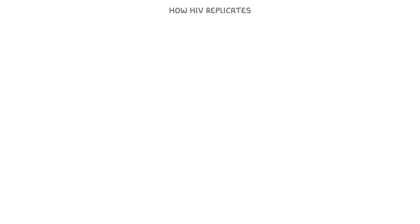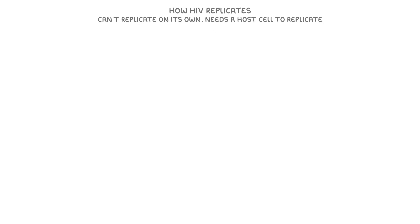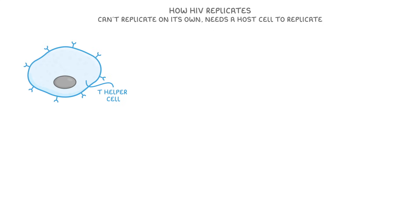Next, let's take a look at how HIV replicates. HIV is a virus, and like all viruses, it can't replicate on its own. Instead, it needs a host cell to replicate, and in the case of HIV, it uses T helper cells as its host cells.